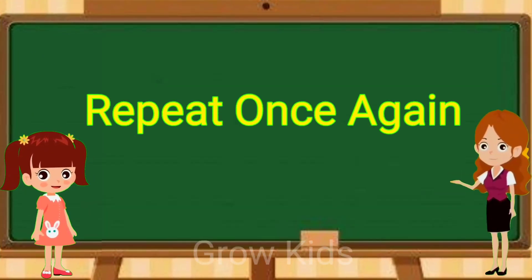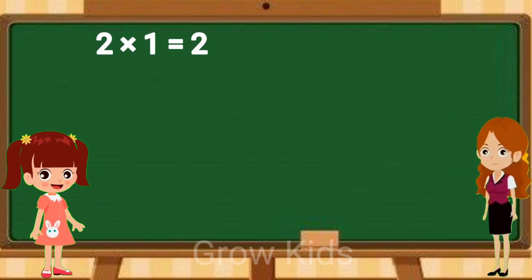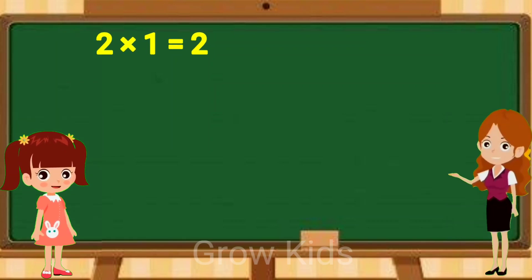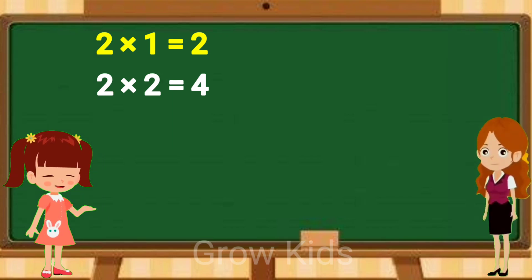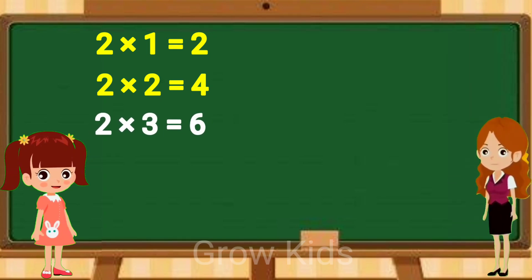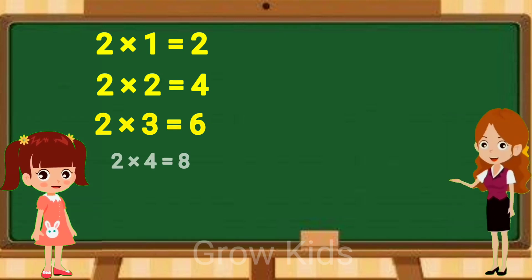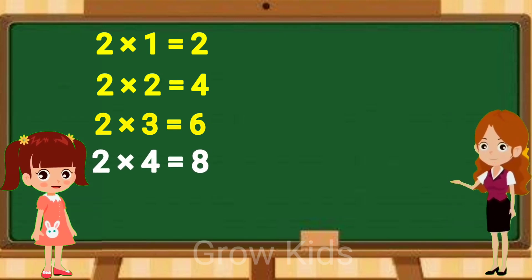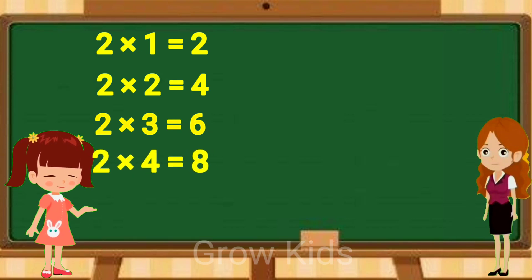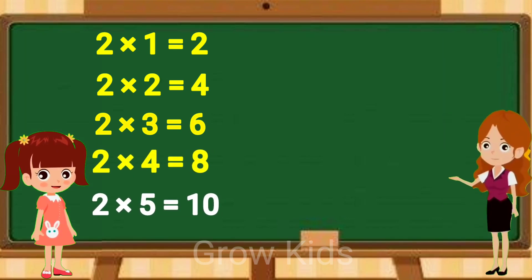Repeat once again. Two ones are two. Two twos are four. Two threes are six. Two fours are eight. Two fives are ten.